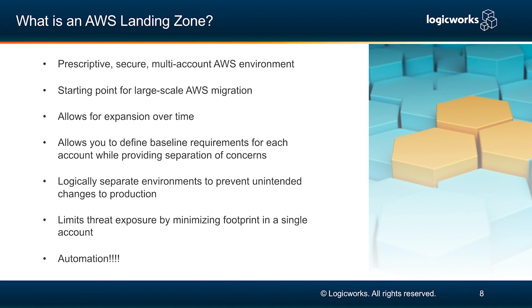You have logically separated environments that help to prevent unintended changes in production, and it limits your threat exposure by minimizing footprint in a single account. So if there is a breach or a failure, all of your applications won't be compromised — only a single application or a single account might be compromised should something go wrong. And my favorite part of the Landing Zone: automation. It allows for a really easy way to automate the process of deploying new accounts in AWS.